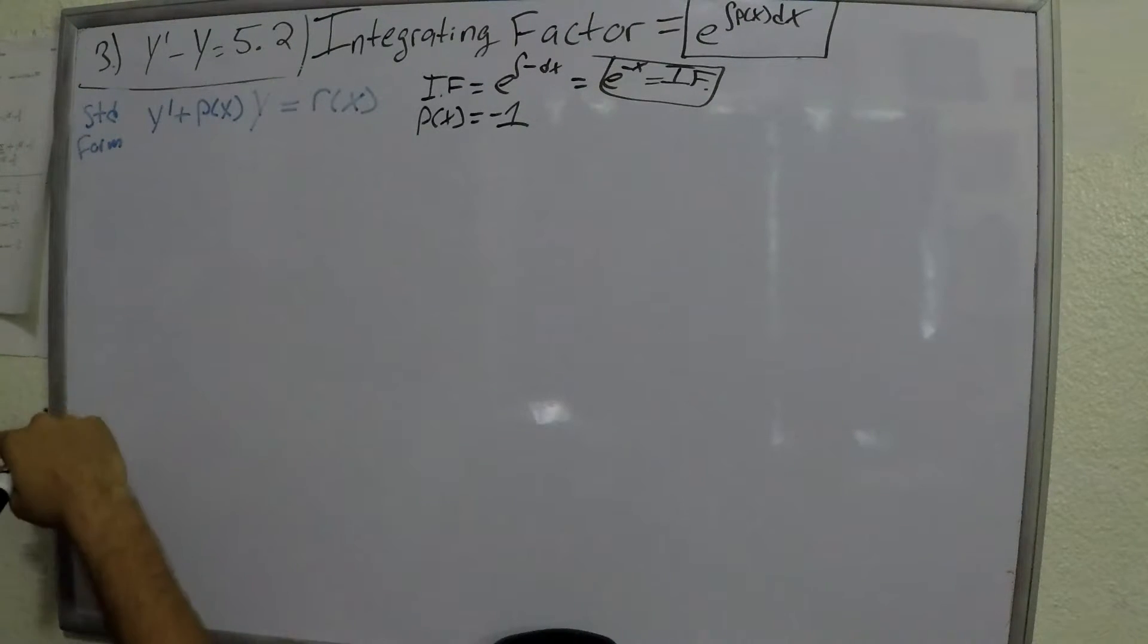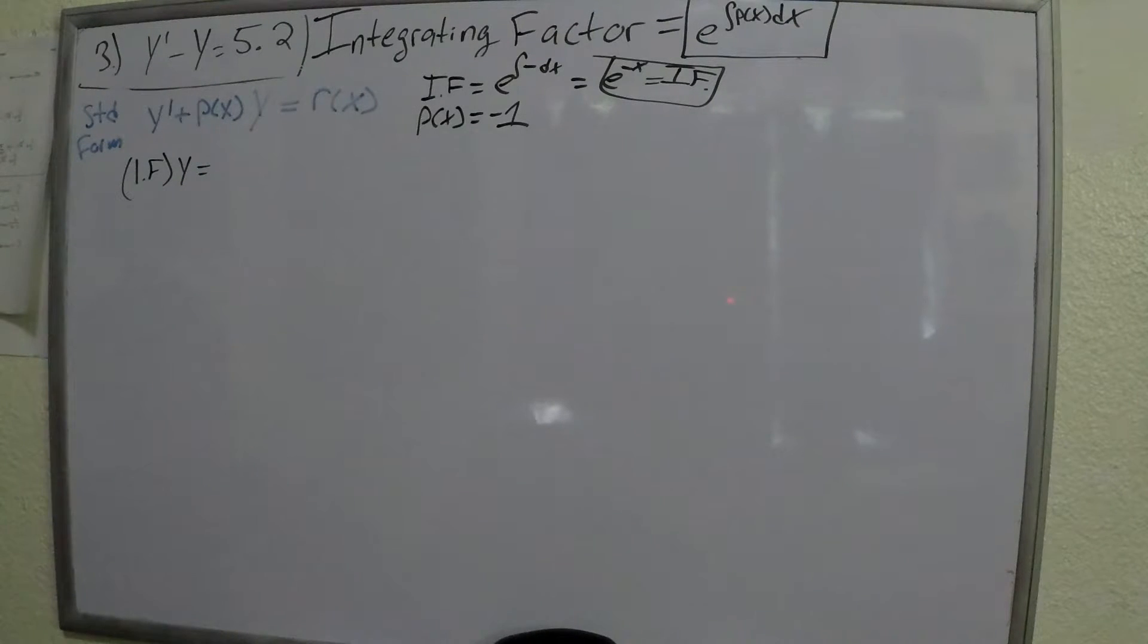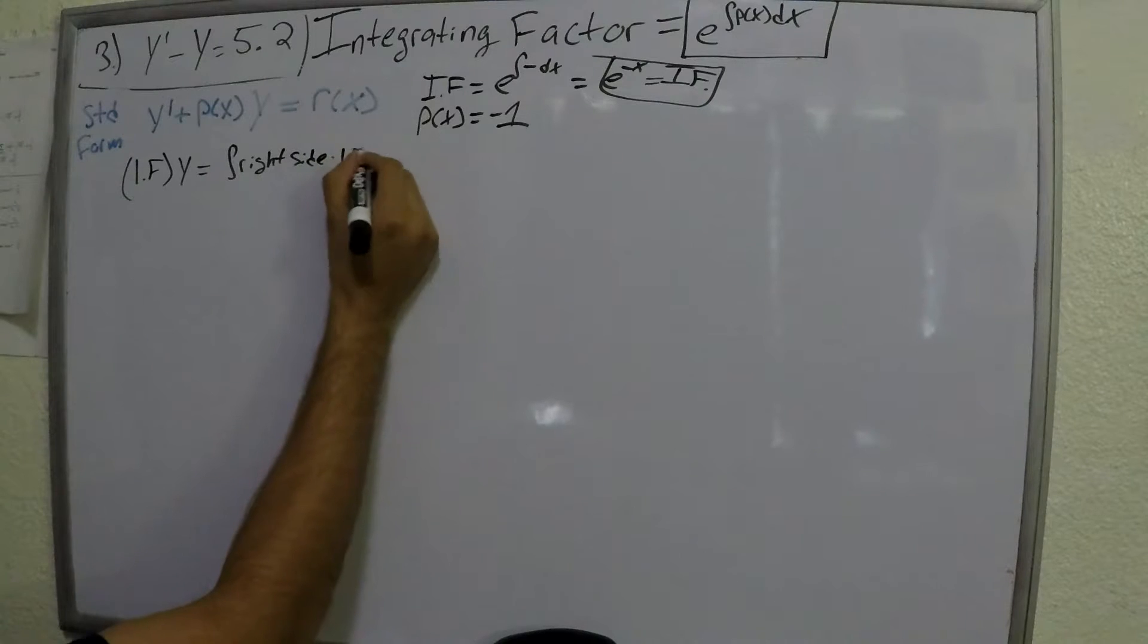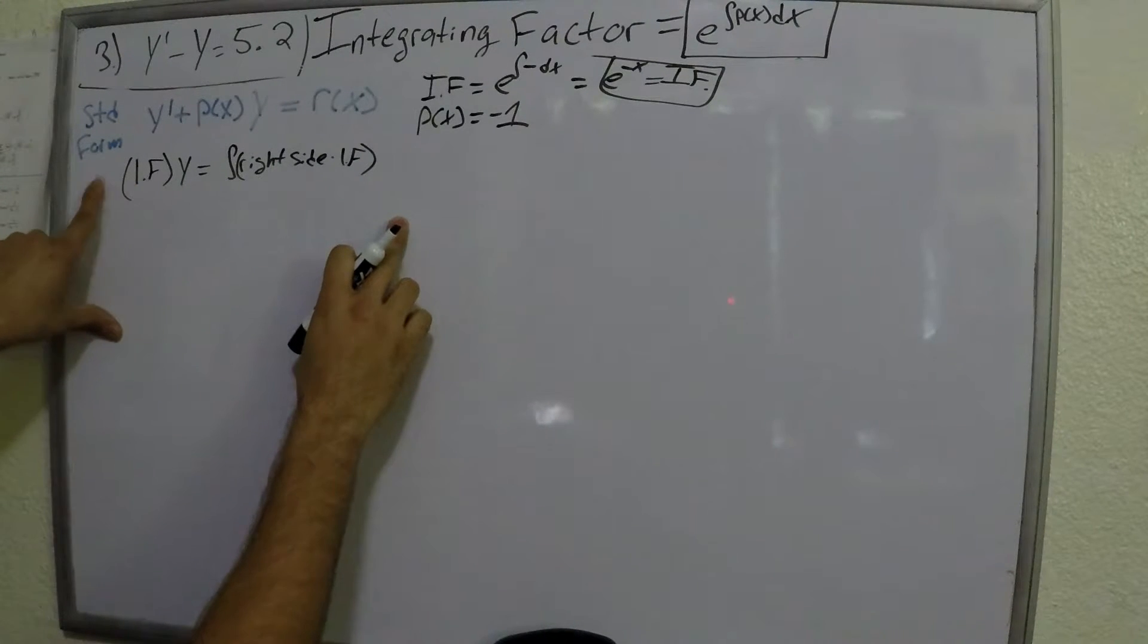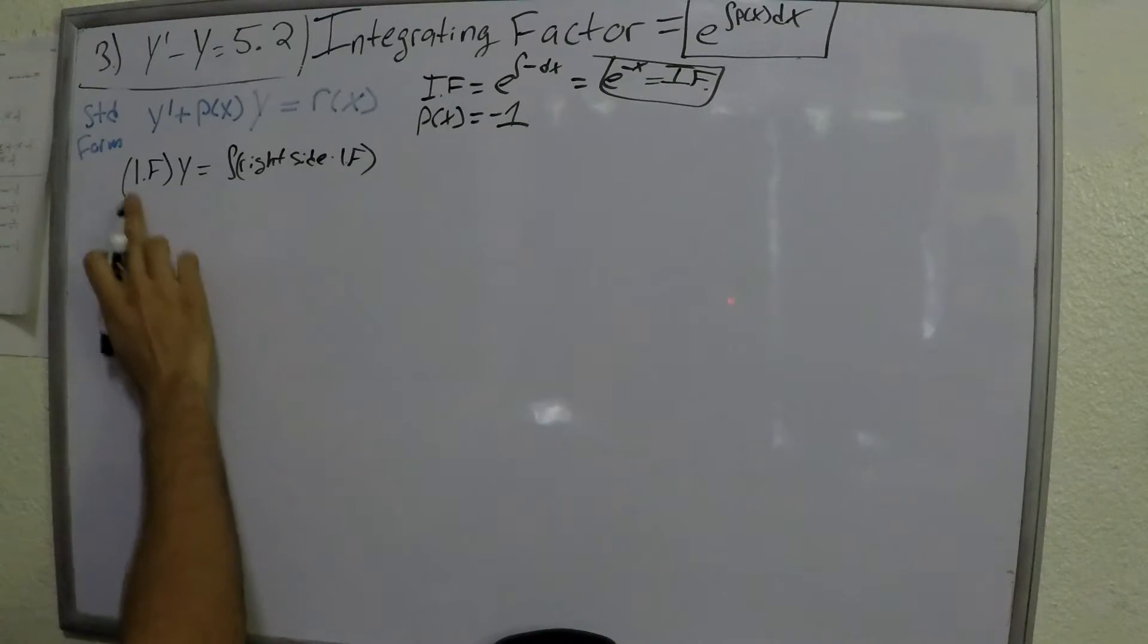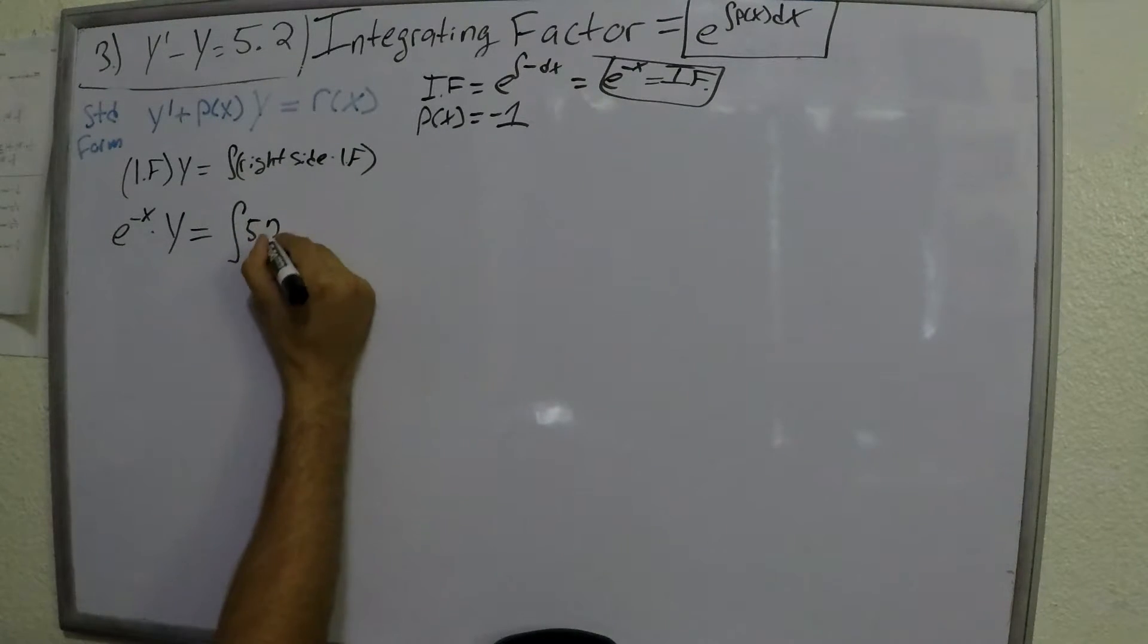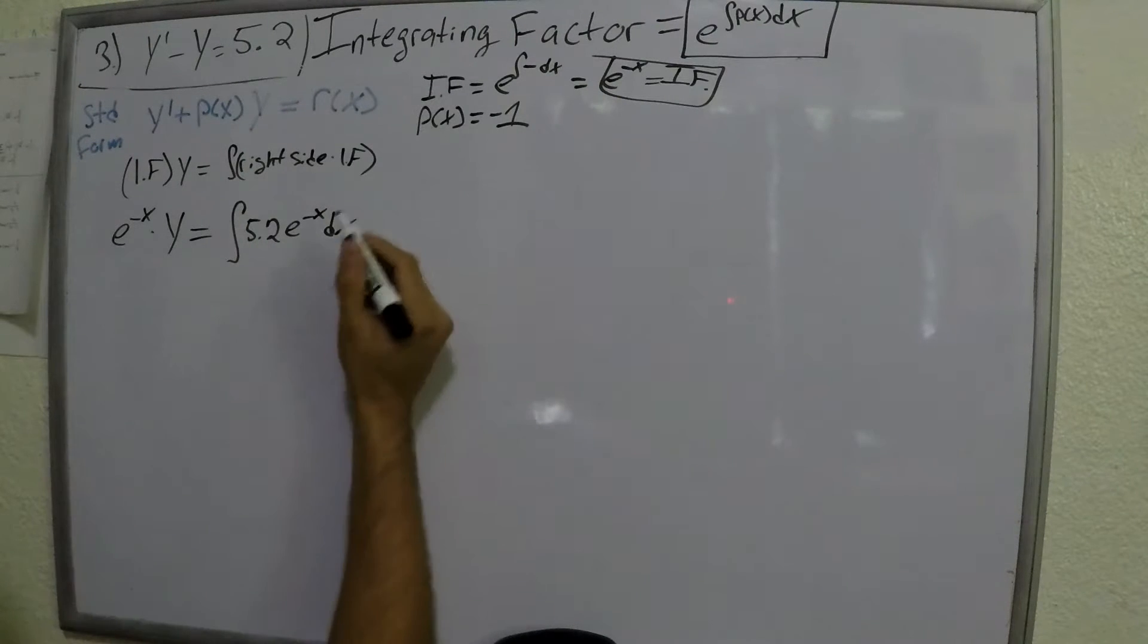And I'll show you how that helps right now. Now, many different solution manuals, including Chegg I believe, use different methods of using this. But the number one, or the best method I found, is you're supposed to multiply this integrating factor times y is equal to the integral of this right side times the integrating factor. Like that, the right side of the equation. Likewise, if you differentiate both sides, the derivative of y prime times the integrating factor is going to be equal to the right side times the integrating factor. But this way is pretty simple. So since we find the integrating factor, which is e to the negative x, we can go ahead and do that. E to the negative x multiplied by y is going to be equal to the integral of the right side, which in this case is simply 5.2 times e to the negative x. Let's not forget the dx.